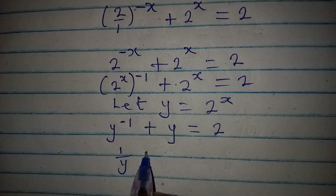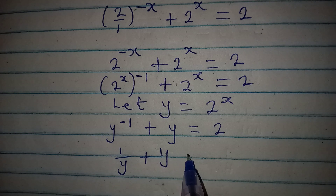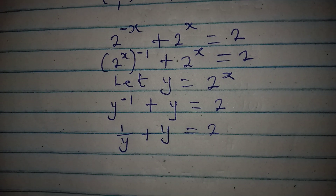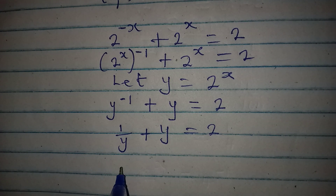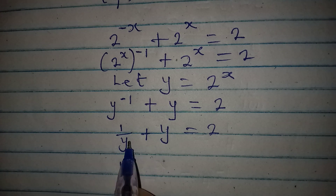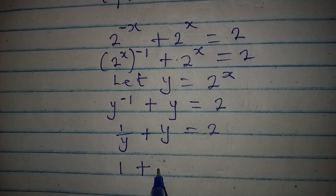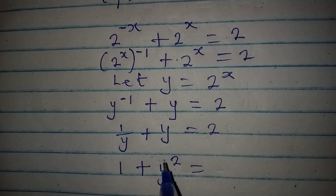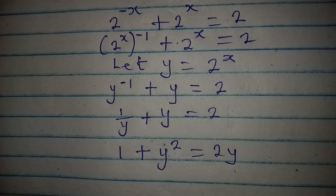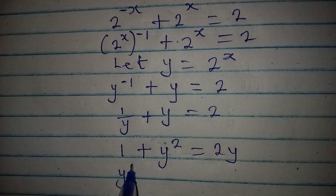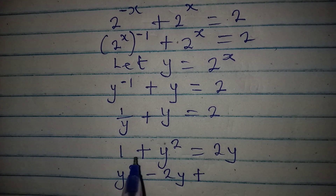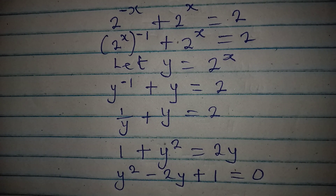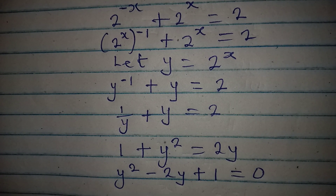Equal to 2. And y to the power of negative 1 is the same as 1 over y. So 1 over y plus y equals 2. Now let's clear out the fraction: multiplying through by y, y cancels from 1 over y giving 1, and we get y squared equal to 2y. Rearranging: y squared minus 2y plus 1 equals 0.